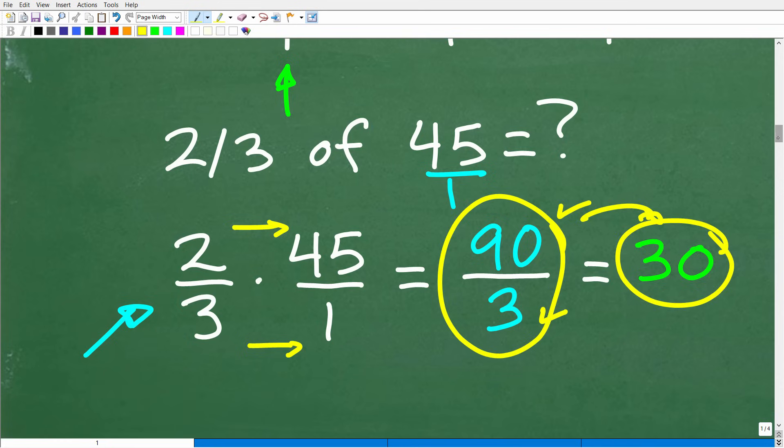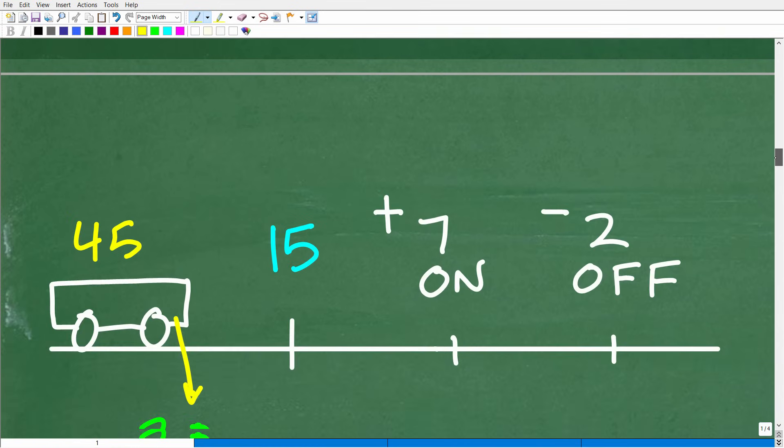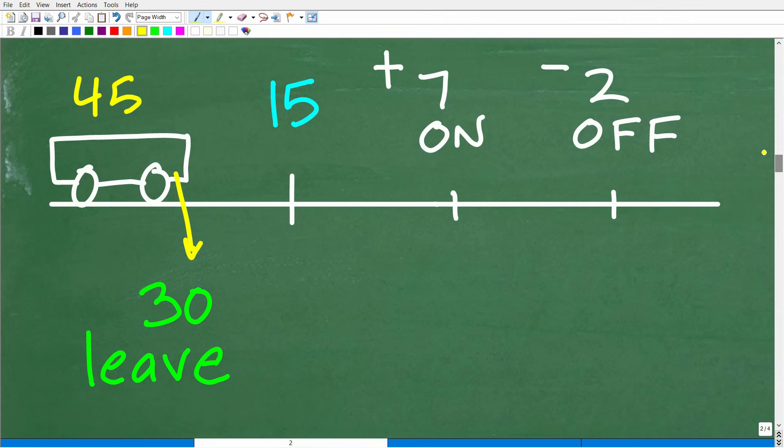All right. So what does that mean? Well, it means that in our problem here, 30 people left the bus, which, of course, is two-thirds of the people that were on the bus. All right. So two-thirds of the people on this bus with 45 people on it left the bus. That's 30 people.